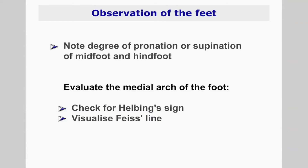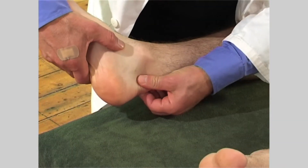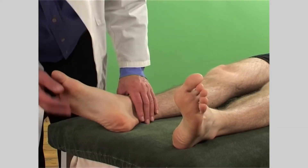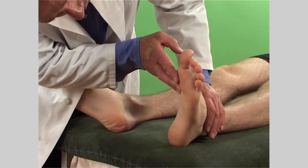Check for the Helbing sign and attempt to visualise or draw a feet line to evaluate the medial arch and foot pronation. Note any angulation, thickening or swelling of the Achilles tendon. Check the plantar aspect of the feet for bunions, corns and dry skin. Remember to inspect the patient's shoes for uneven or abnormal wear and tear patterns.